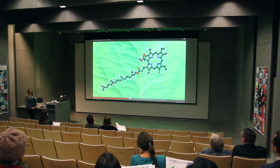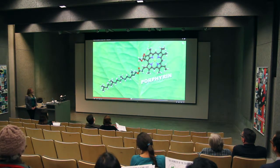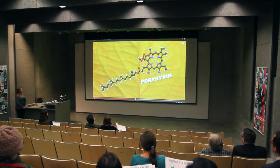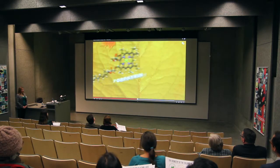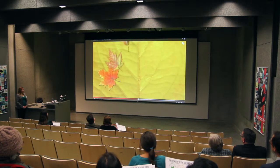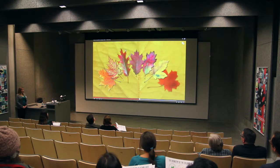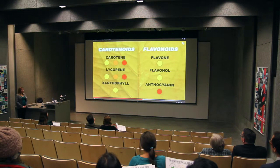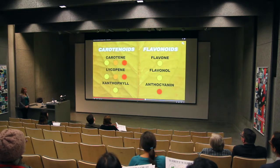Chlorophyll contains a type of pigment structure called a porphyrin. As the temperatures drop and the days shorten, leaves produce less and less chlorophyll, and the porphyrin starts to break down into smaller components and ultimately loses its green color. And when it does this, it reveals the hidden colors beneath. Primarily, there are reds and yellows in two larger pigment groups: carotenoids and flavonoids.